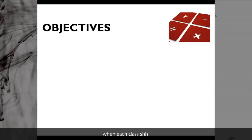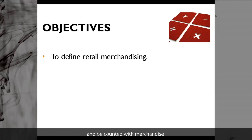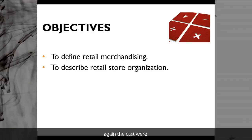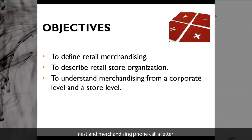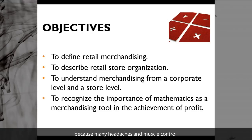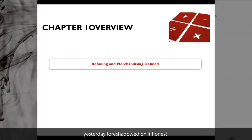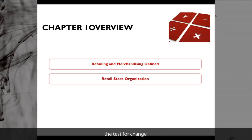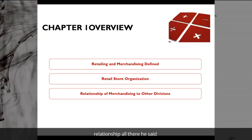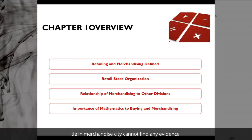The objectives for this chapter include: you need to be able to define retail merchandising; second, to describe retail store organization; to understand merchandising from a corporate level and a store level; and to recognize the importance of mathematics as a merchandising tool in achieving profit. We'll also cover the definition of retailing and merchandising, retail store organization, relationship of merchandising to other divisions, and importance of mathematics to buying and merchandising.